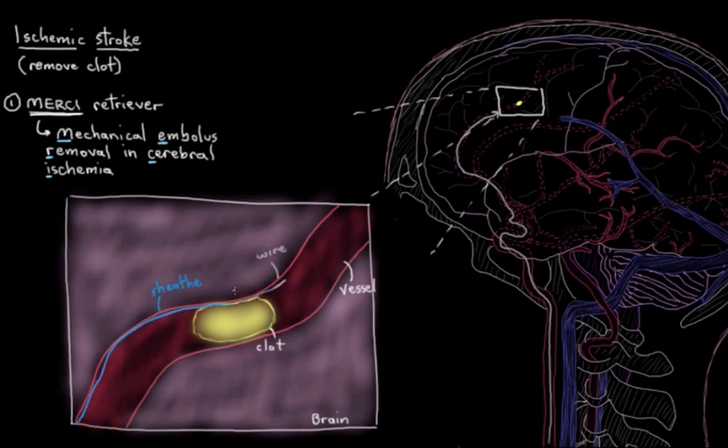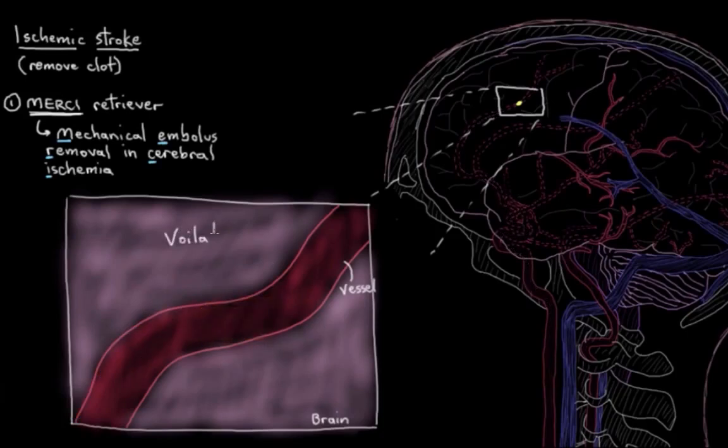And then when the sheath gets retracted, the wire starts to actually coil up on its own. And then as the wire is slowly retracted, as you can probably imagine, it'll catch onto the clot. It'll grab onto the clot nice and tight. And then the wire and the clot, together they're both removed. And now blood can perfuse this area again and try to save all this brain tissue here. So that's MERCI retrieval. It's pretty cool stuff.